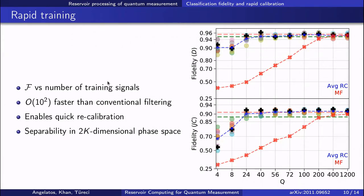You may have noticed on the previous slide that the reservoir computer was trained with far fewer signals than the match filter, and to highlight this, here we plot the classification fidelity as a function of training set size Q for 10 different random reservoirs in various colors.